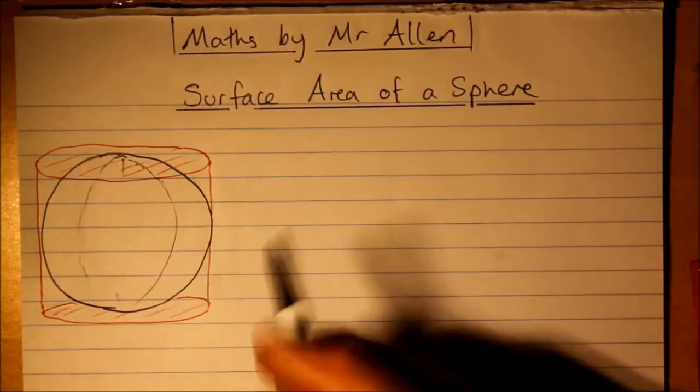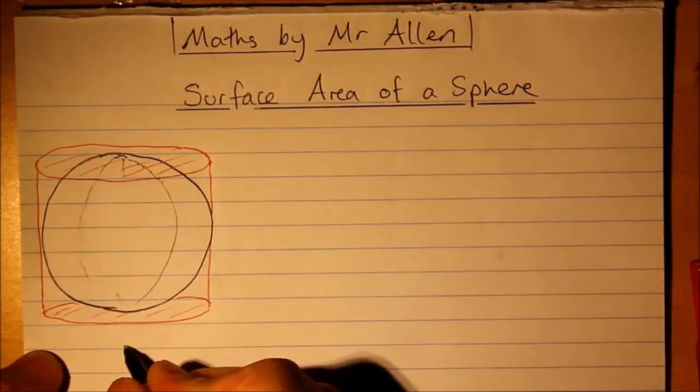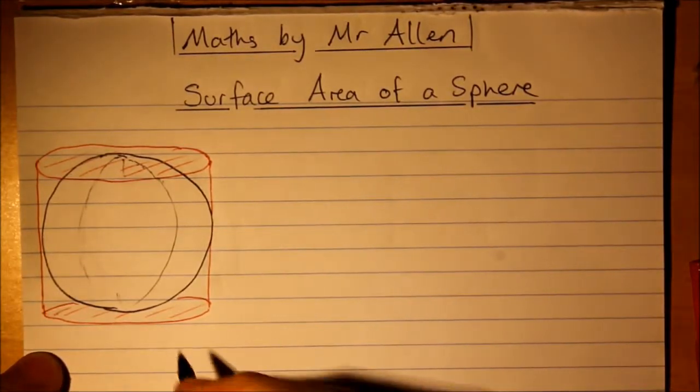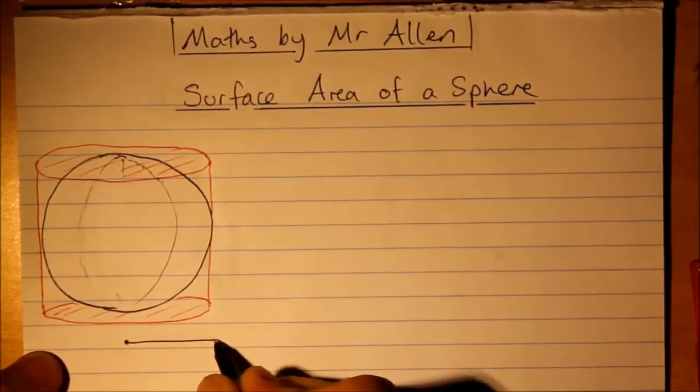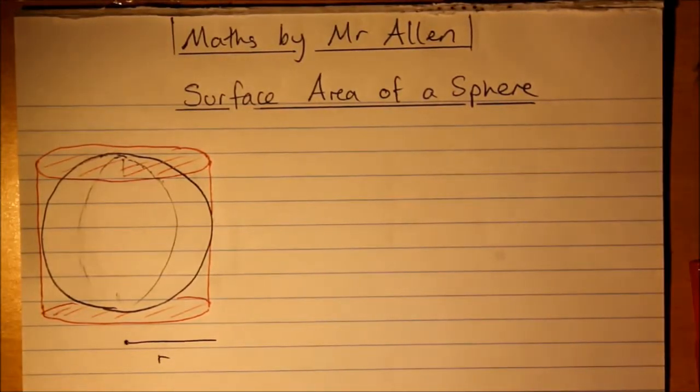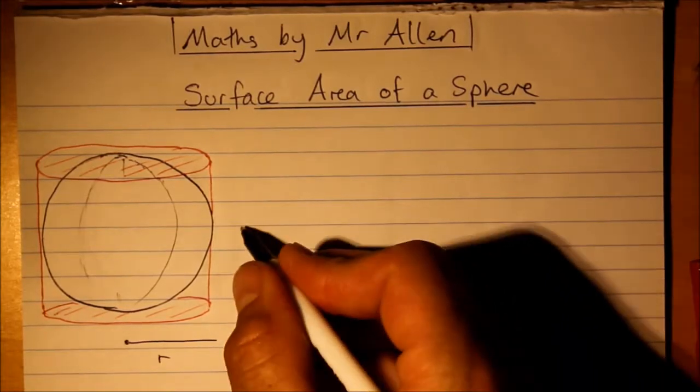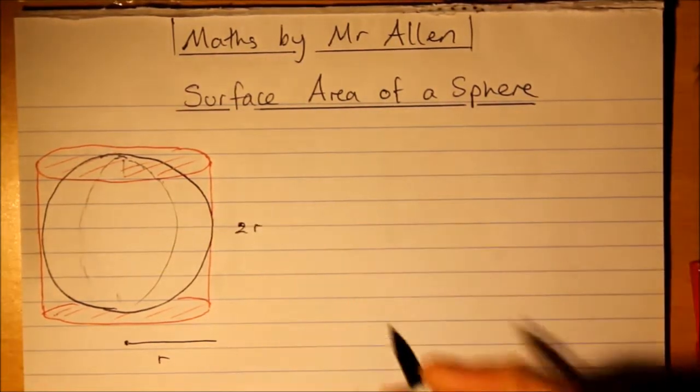So what's the dimensions of that curved part of the cylinder? If we can find that, that'll tell us the surface area of the sphere. In this case, this length is r and that makes the height 2r.